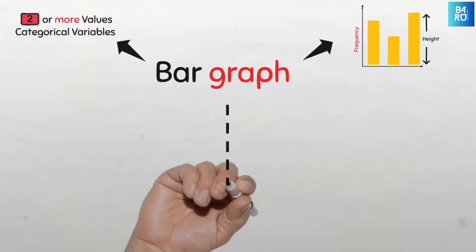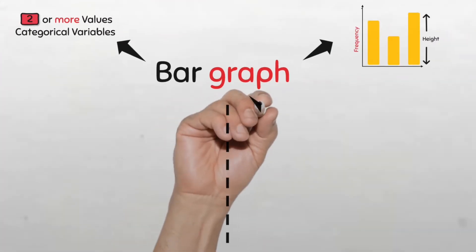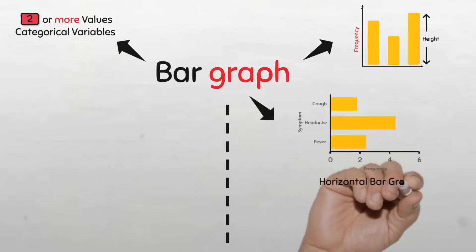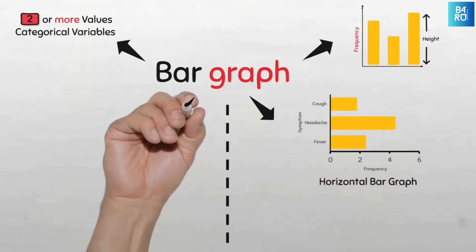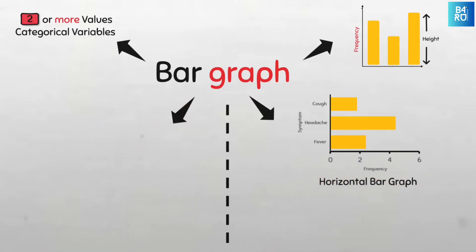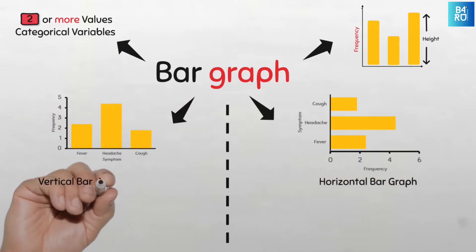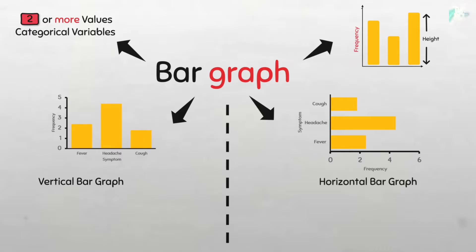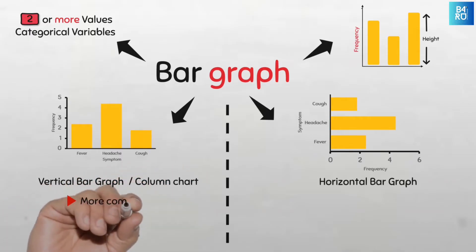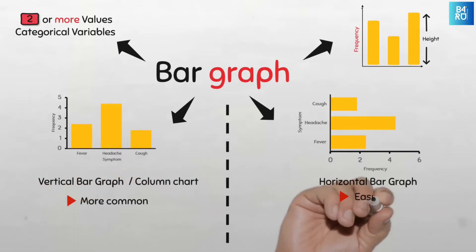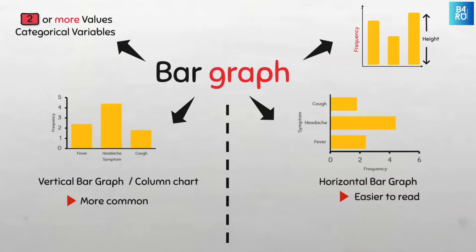Bar graphs can be oriented either horizontally as horizontal bar graphs or vertically as vertical bar graphs, also known as column charts. Though vertical bar graphs are more common, horizontal ones are easier to read since the layout is just the same as how we process information.